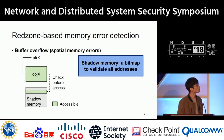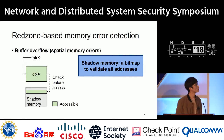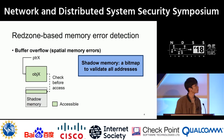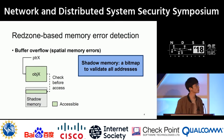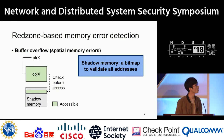The redzone-based approach focuses on detecting two kinds of memory errors: spatial memory errors like buffer overflow, and temporal memory errors like use-after-free. They use shadow memory, which has compressed information to validate all virtual addresses. Before accessing a certain address, they check the corresponding shadow memory.